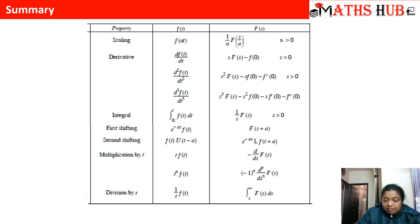The third derivative formula will be s cube Laplace of fs minus s square f at 0 minus s into f dash 0 minus f double dash 0. So here you can see that the powers of s will keep on decreasing and the derivative power will keep on decreasing every term.